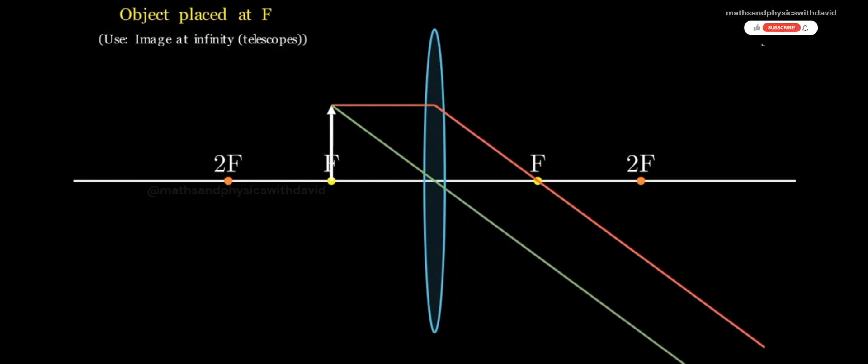In this case, the rays do not meet, instead, they travel parallel to each other. This means the image is formed at infinity.